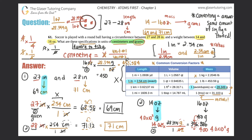So the final answers: the circumference is between 69 and 71 centimeters, and the weight is between 4.0 × 10² grams and 450 grams. I hope this helped — if it did, click subscribe, leave a comment, or give us a like. Any feedback shows us you're learning, and that's what we're here for. See you in the next question!